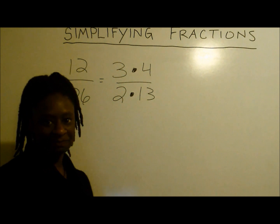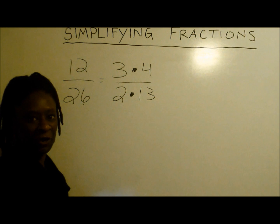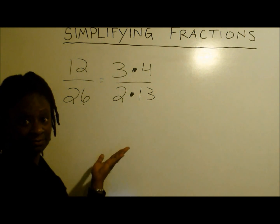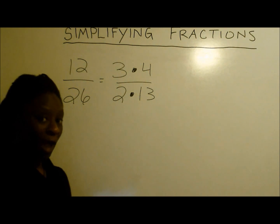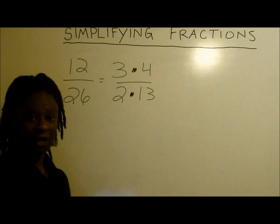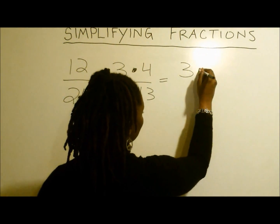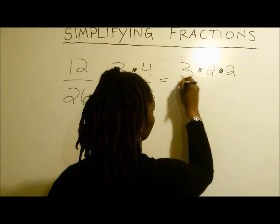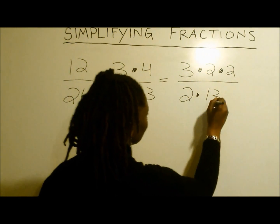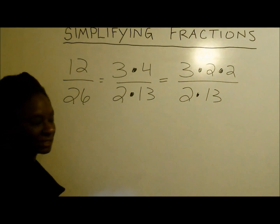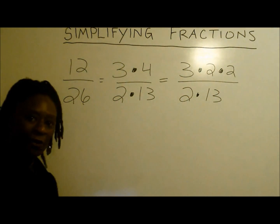So what's our next step? Yes, you remember — we have to eliminate any like terms. Do you see any like terms there? I don't think so. So what do we do now? Well, we'll just have to break it down a little further. So now we have 3 times 2 times 2 times 2, which gives us 12. And 2 times 13 still gives us 26. So we simply broke the 4 down further to 2 times 2.